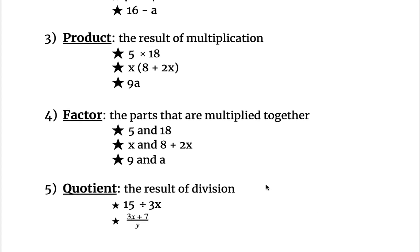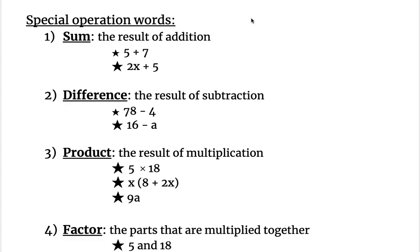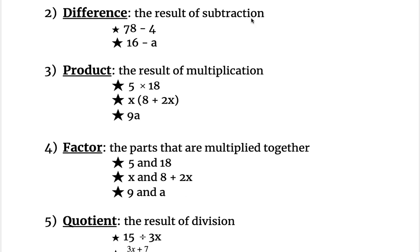And lastly we have quotient, which tells us the result of division. So 15 divided by 3x could also be the quotient of 15 and 3x. So we have the division symbol. The fraction bar could also represent quotient. So here it's 3x plus 7, that whole entire thing, the whole entire expression being divided by y. So the division bar also tells you quotient. Make sure you have all this written down in your notes before we move on to talk about some examples.